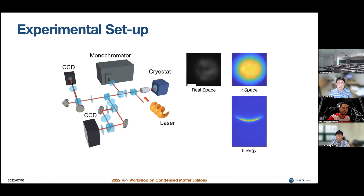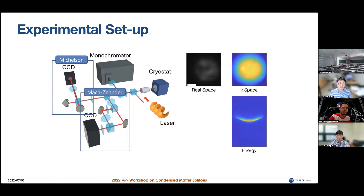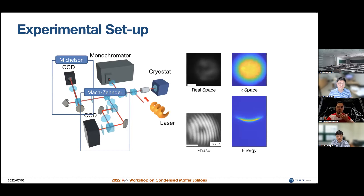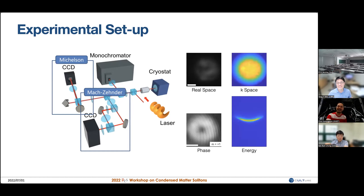If we shine a laser into a cryostat where the sample is encapsulated, the laser forms exciton-polaritons, and when the photon escapes the cavity, the emitted light can be imaged through a CCD. You get a real-space image giving spatial density information about the exciton-polaritons. With an additional lens to transform from real space to k-space, you can also get k-space distribution. Sending the emission through a monochromator gives wavelength and thus energy information, allowing you to directly map the dispersion relation. You can also construct interferometers to extract phase information about the emitted exciton-polariton wave function.